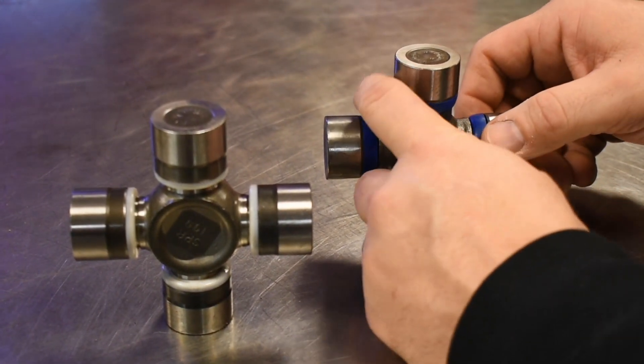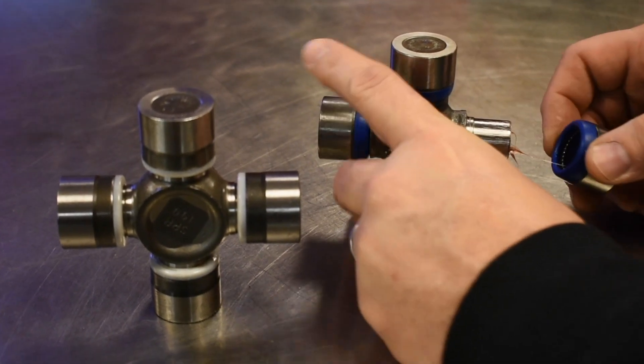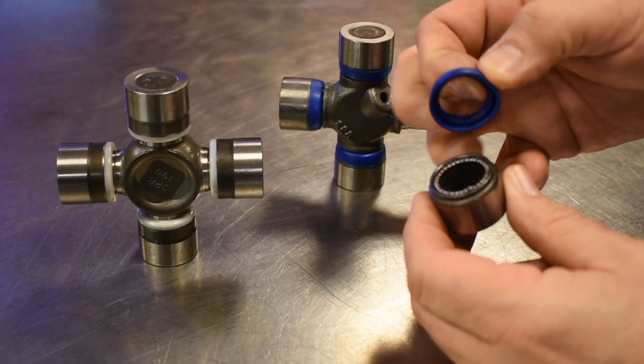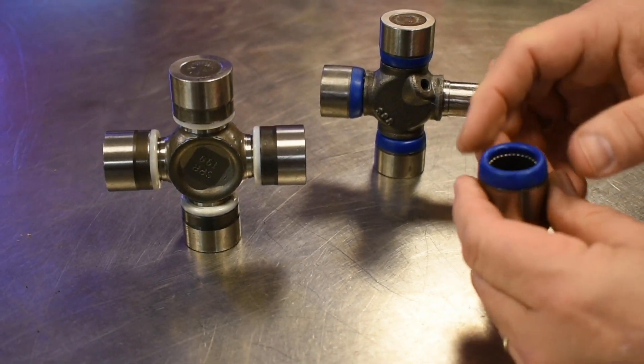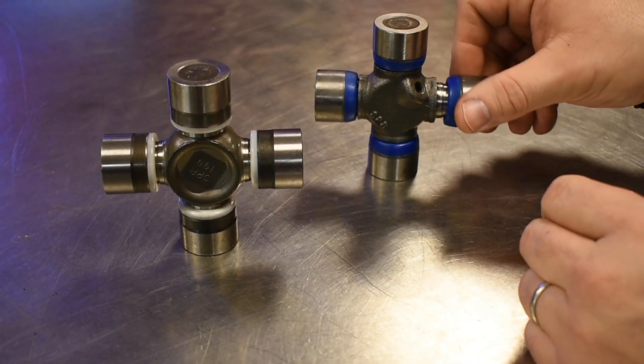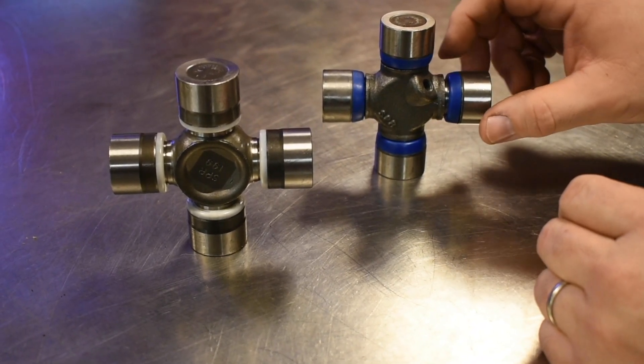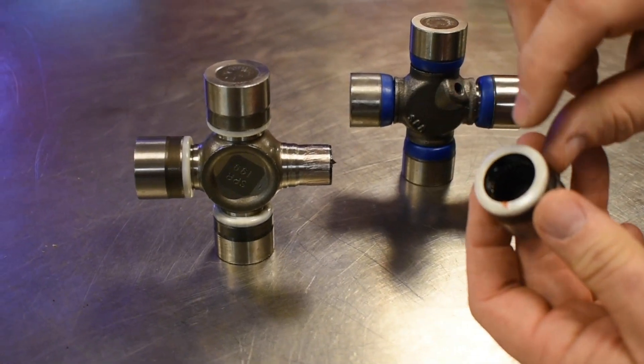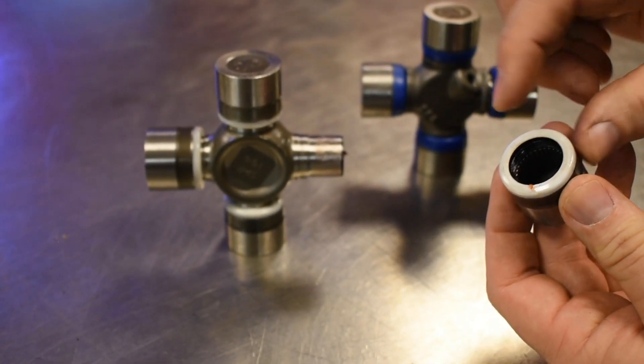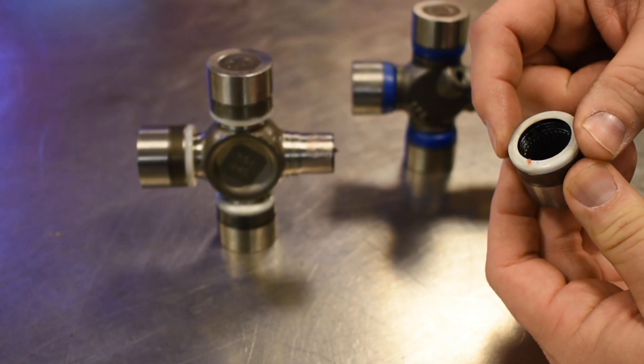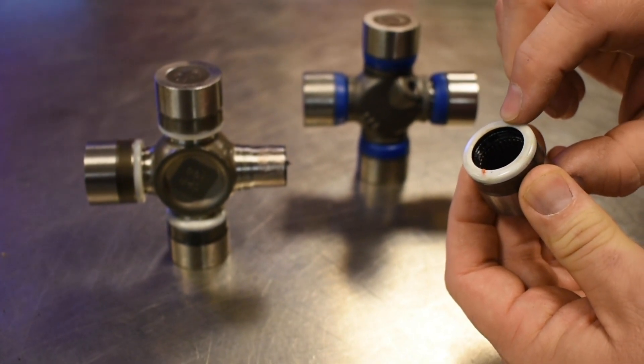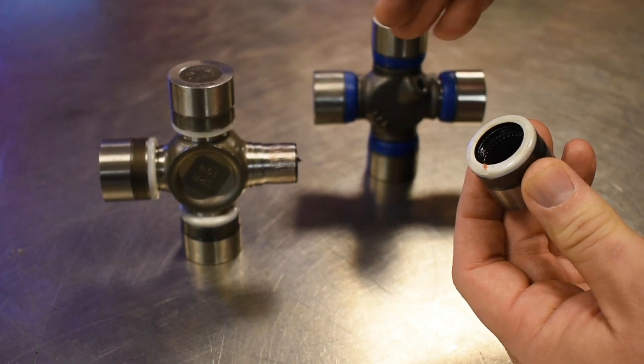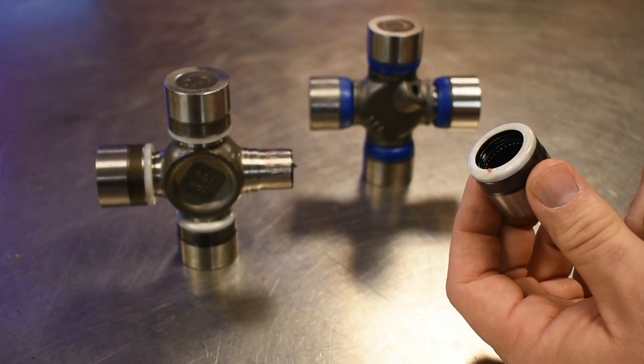The next thing with a greasable u-joint is this rubber seal. It's not really meant to keep anything out so water can definitely infiltrate into the bearings. This one has a double lip rubber seal plus a seal protector so nothing is going to get in and out of this universal joint. You install it, it's good for the life of the vehicle.